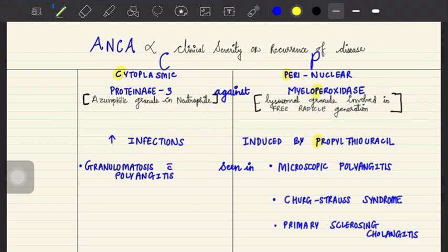severity and recurrence. C-ANCA is cytoplasmic ANCA and P-ANCA is perinuclear ANCA, named based on their staining pattern which we'll see later. C-ANCA is antibody against proteinase 3, the azurophilic granule in neutrophils, whereas P-ANCA is antibody against myeloperoxidase, a lysosomal granule involved in free radical production.